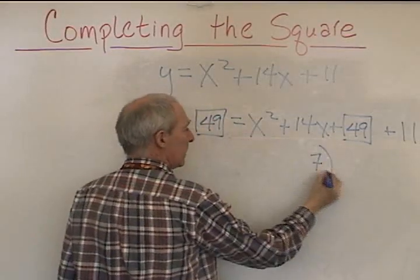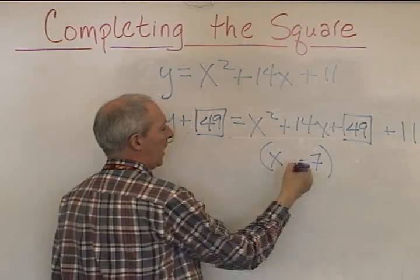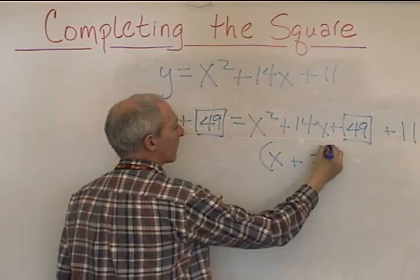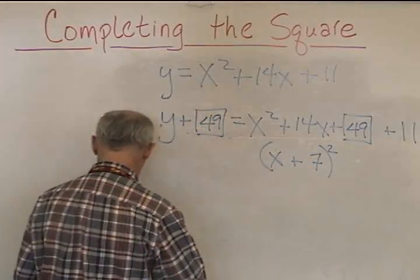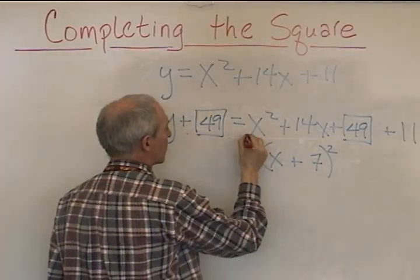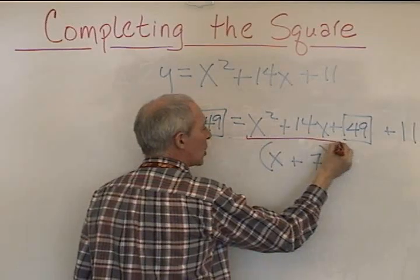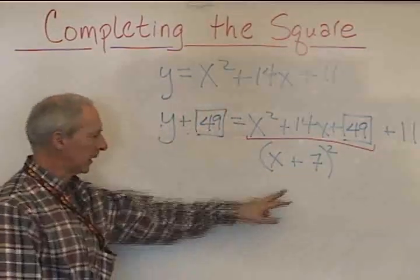And this perfect binomial becomes x plus 7, all squared. Bring this down because what we have just done, don't get confused, we've worked with these three numbers in here.